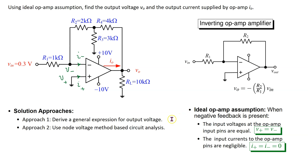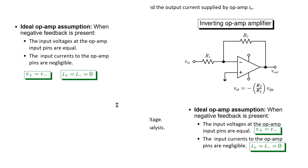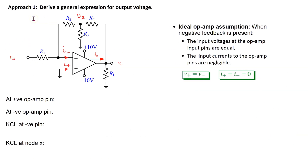There are two main ways to solve this circuit, and in this video we will see both approaches in action. Let us look at approach 1 first. This approach is based on deriving a general expression for the output voltage in terms of the input voltage and resistors. To do this, we ignore the values of the resistors and use ideal op-amp assumption in conjunction with node voltage method.